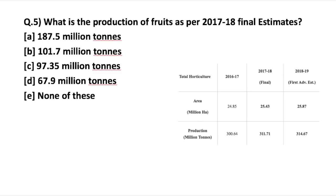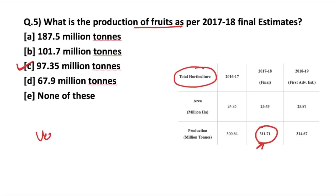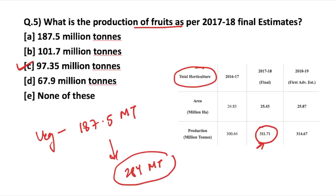Be careful about the distinction between horticulture estimates and food crops estimates. The question asks about the production of fruits as per the 2017-18 final estimates. Total horticulture production as per the final estimates was 311.71 million tons; fruits stand at 97.35 million tons, and vegetables are estimated at 187.5 million tons. Fruits and vegetables together contribute over 284 million tons to horticulture. Remember: the first advanced estimates have been released for horticulture crops, while the third advanced estimates have been released for food crops.